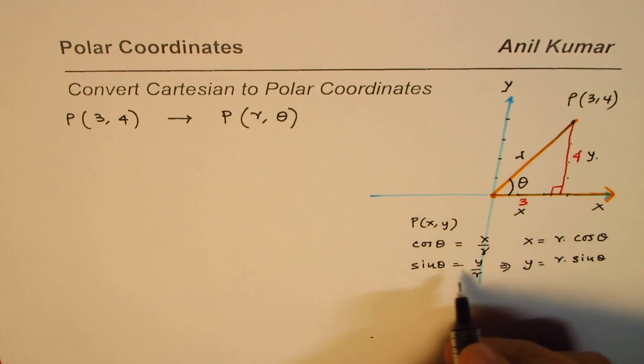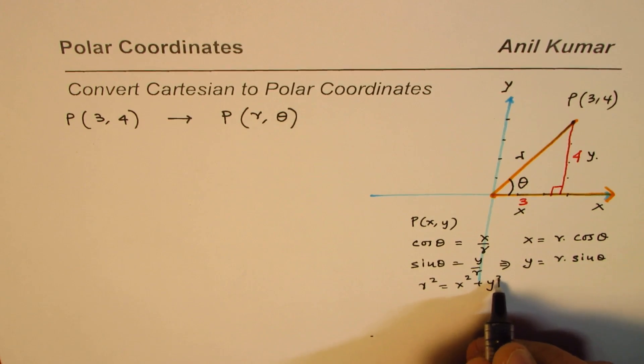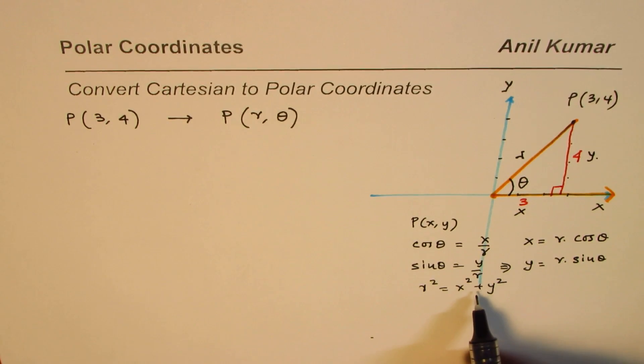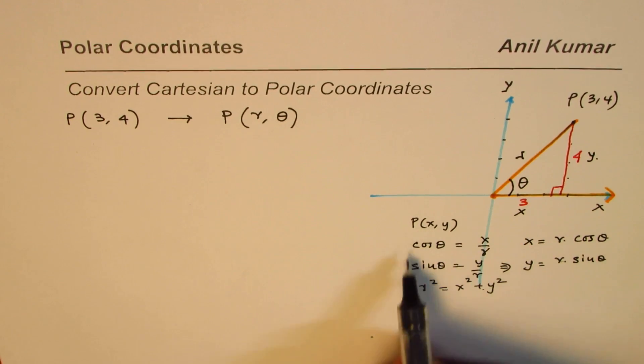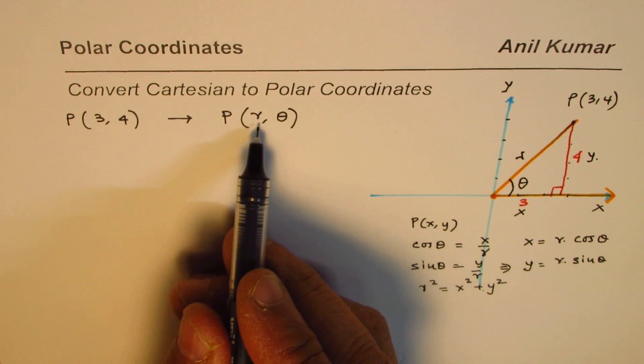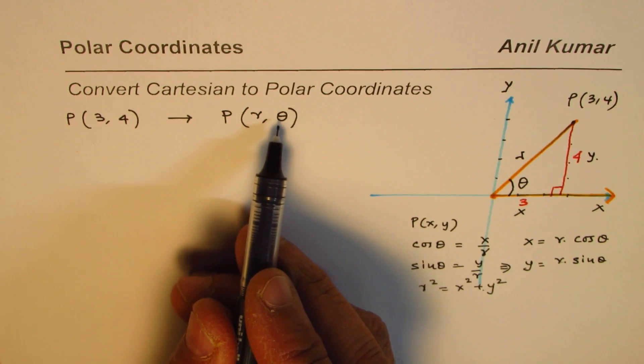Using Pythagorean theorem, we can write r square equals to x square plus y square. So what we have done here is we have converted x, y to r and theta, and that is what is polar coordinate system. So we'll apply this knowledge and then find what r is and what theta is.